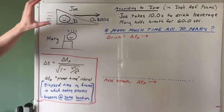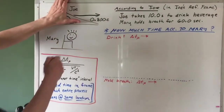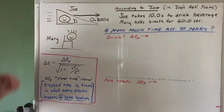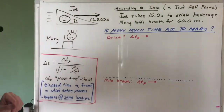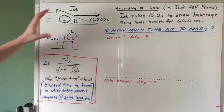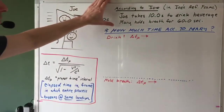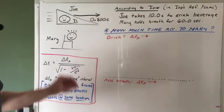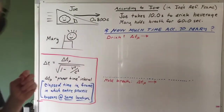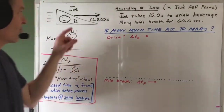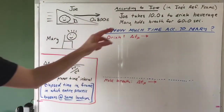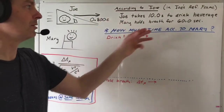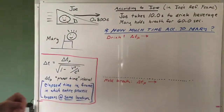This also means that according to Joe, Mary is moving to the left at 0.8C. Imagine we have the following information: according to Joe, in Joe's reference frame, Joe takes 10 seconds to drink his beverage. Meanwhile, Mary, according to Joe, holds her breath for 60 seconds.